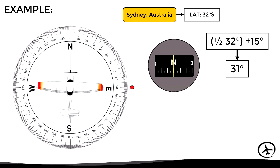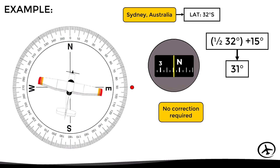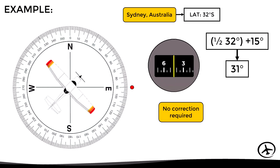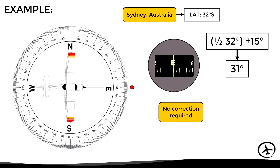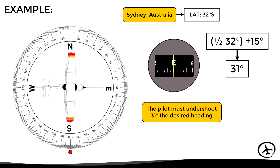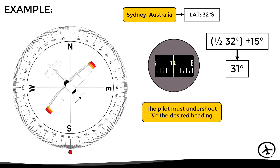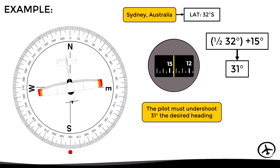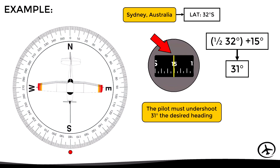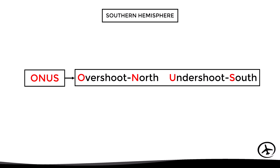If the aircraft then turns to an east heading, no correction is needed since east and west headings have no turning errors, though starting from north the compass will initially show a faster rate before correcting to east. If turning to a south heading, the pilot must undershoot by 31 degrees — the compass lags, indicating heading 149 when the aircraft actually reaches south heading. The pilot stops at that point and waits for the compass to settle.